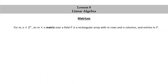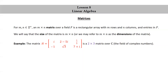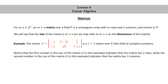Now more generally, for M and N positive integers, an M by N matrix over a field F is a rectangular array with M rows, N columns, and entries in F. The size of the matrix is M by N, also called its dimensions. For example, the matrix H with entries i, 2-5i, 1/5, -1, √3, 7+i is a 2 by 3 matrix over C, the field of complex numbers. The first number indicates the number of rows; the second indicates the number of columns.